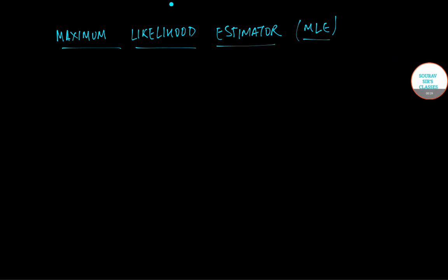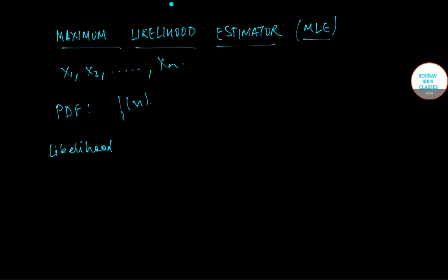Now suppose that I have a sample of random variables x1, x2 and so on up to xn, and the PDF of x is represented by f(x). Then the likelihood function is given as the product of f(xi), where i goes from 1 to n.